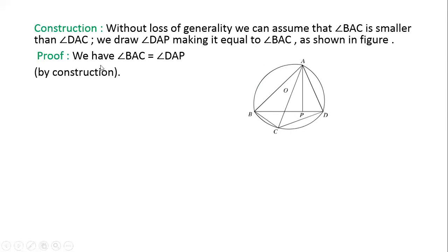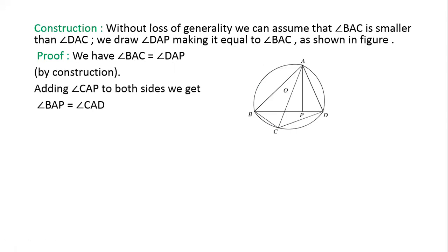Proof: We have angle BAC equal to angle DAP by construction. Adding angle CAP to both sides, we get angle BAP equal to angle CAD. Because angle BAC + angle CAP equals angle BAP, and angle DAP + angle CAP equals angle CAD.